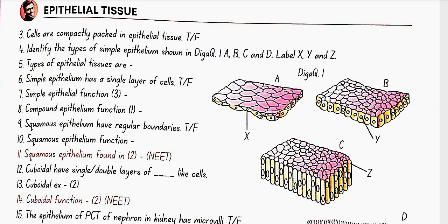So here in Diagram 1: A is squamous, B is cuboidal, C is columnar, D is columnar cells bearing cilia, X is flattened cell, Y is cube-like cell, Z is tall cell.